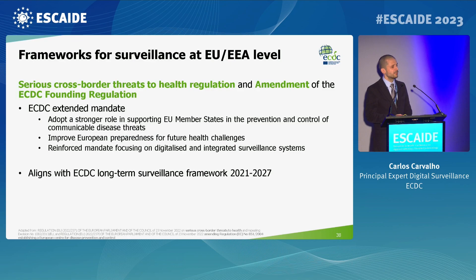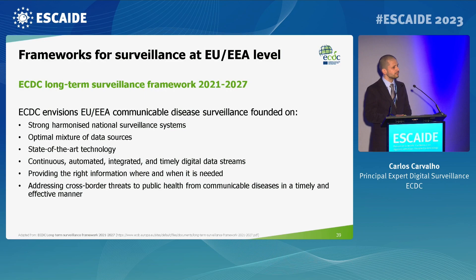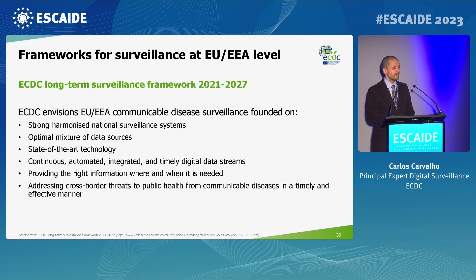All this is aligned in the ECDC long-term surveillance framework 2021–2027. Our vision is to have strong, harmonized national surveillance systems leading to a harmonized EU surveillance system; to make the best use of different and alternative data sources; to use the best available technology; to have a continuous, automated, integrated, and timely use of digital data streams; and to provide the right information to those who need it at the right time and place, addressing cross-border threats in a timely and efficient manner.